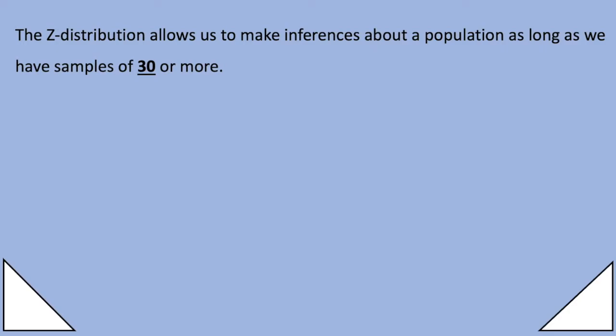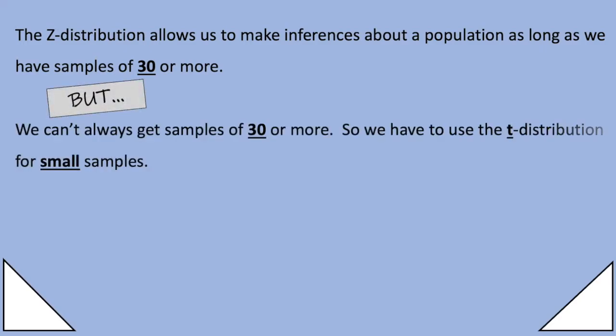So the z distribution allows us to make inferences about a population as long as we have samples of 30 or more, but we can't always get samples of 30 or more so we have to use the t distribution for small samples.